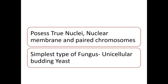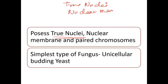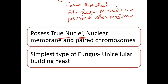Fungi possess true nuclei. They contain a nuclear membrane and paired chromosomes. So the three key features are: true nuclei, nuclear membrane, and paired chromosomes.